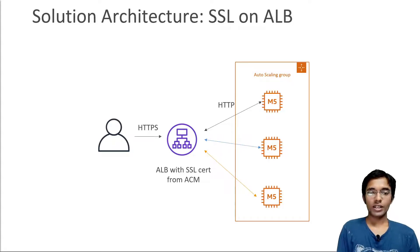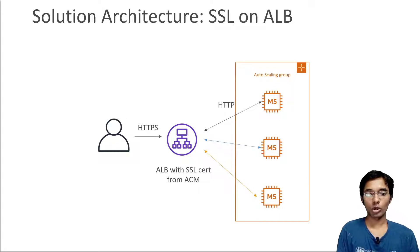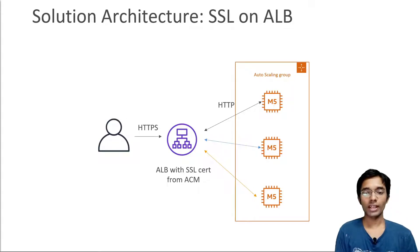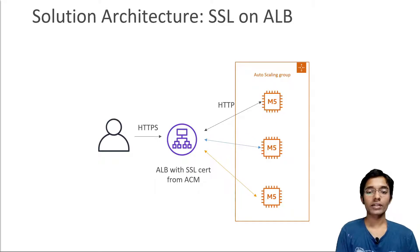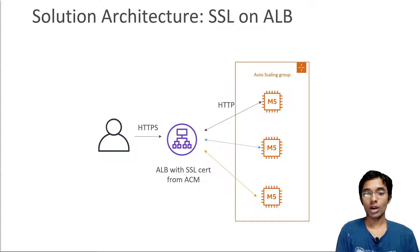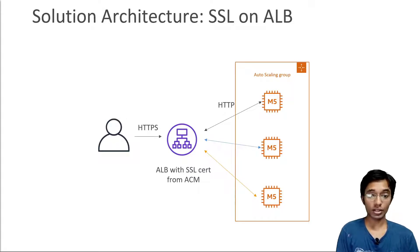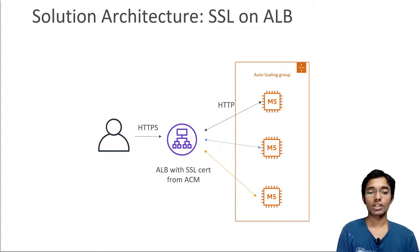Let's discuss some solution architecture when using SSL with a load balancer. We have this classic architecture where we have an auto scaling group and an application load balancer that has an SSL certificate loaded onto it, thanks to Amazon Certificate Manager (ACM). Our users are able to access our load balancer using HTTPS, and then our load balancer can talk to our EC2 instances using HTTP protocol.